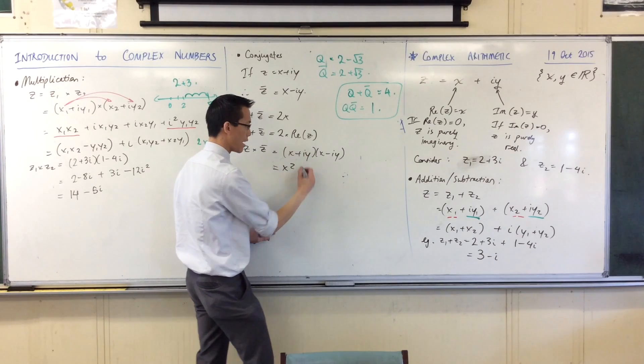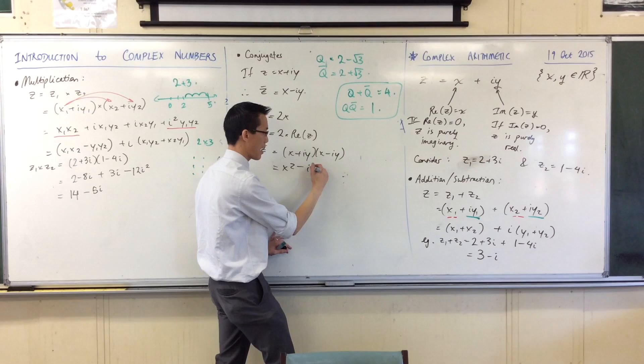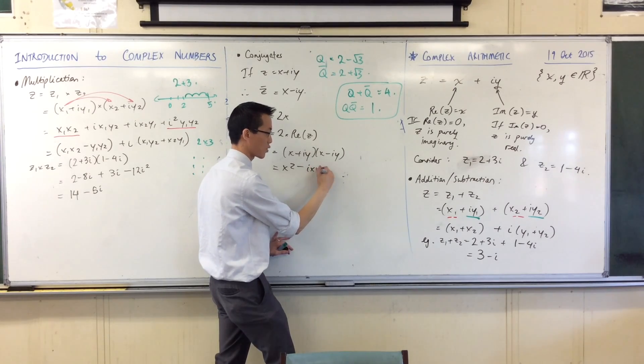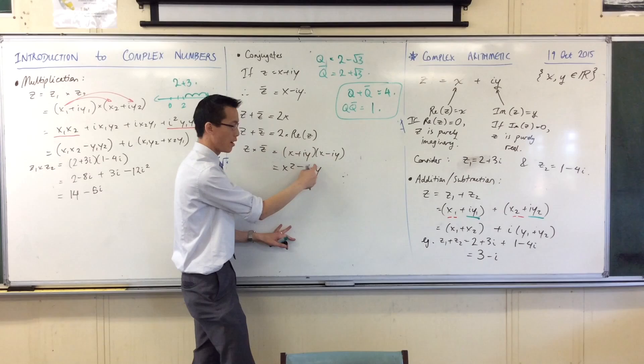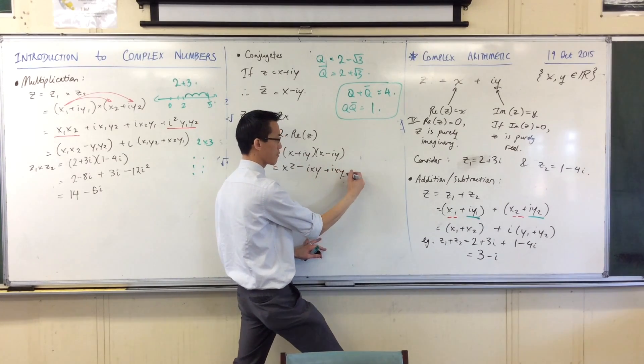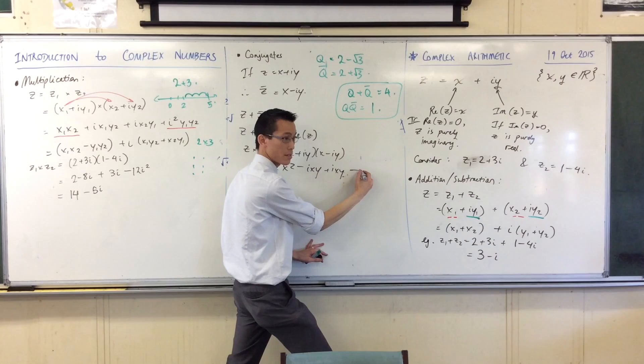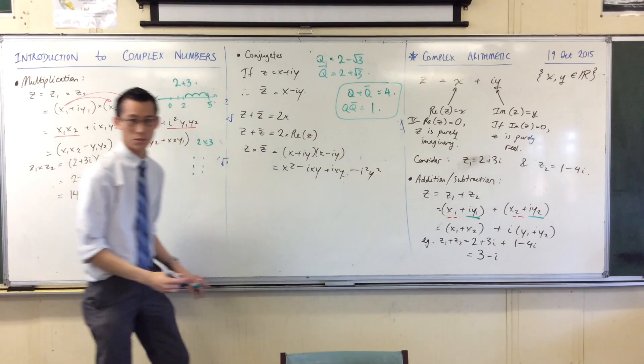I'm going to just treat it like a pair of binomials, yeah? I've got x squared there. I've got minus, minus what? i, y, x, y, y, x, yeah? I'm just writing alphabetical. That's my first pairing. I'm going to do my second pairing. I've got i, x, y minus i squared, y squared.